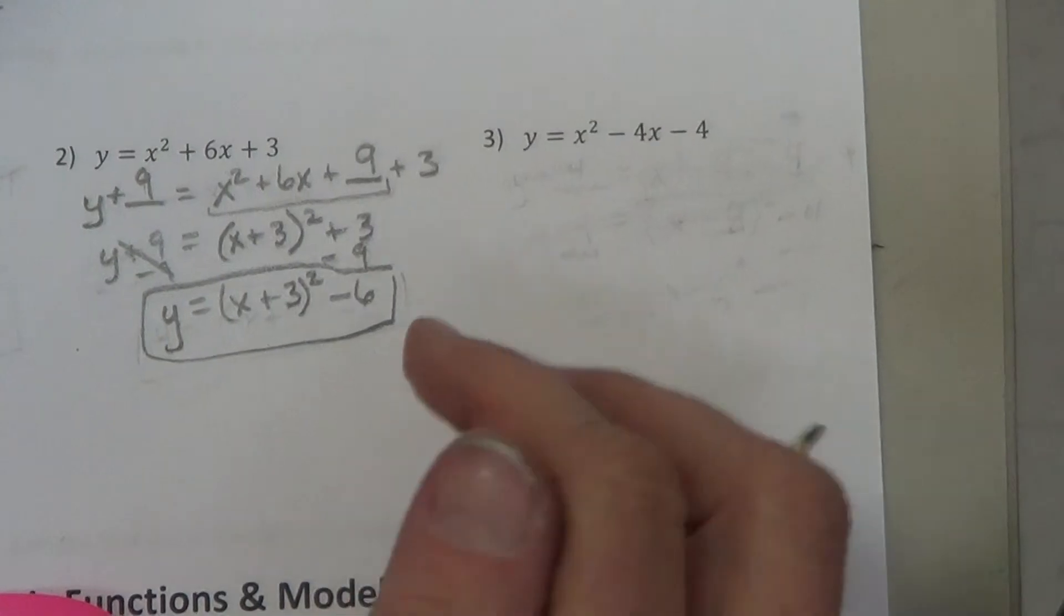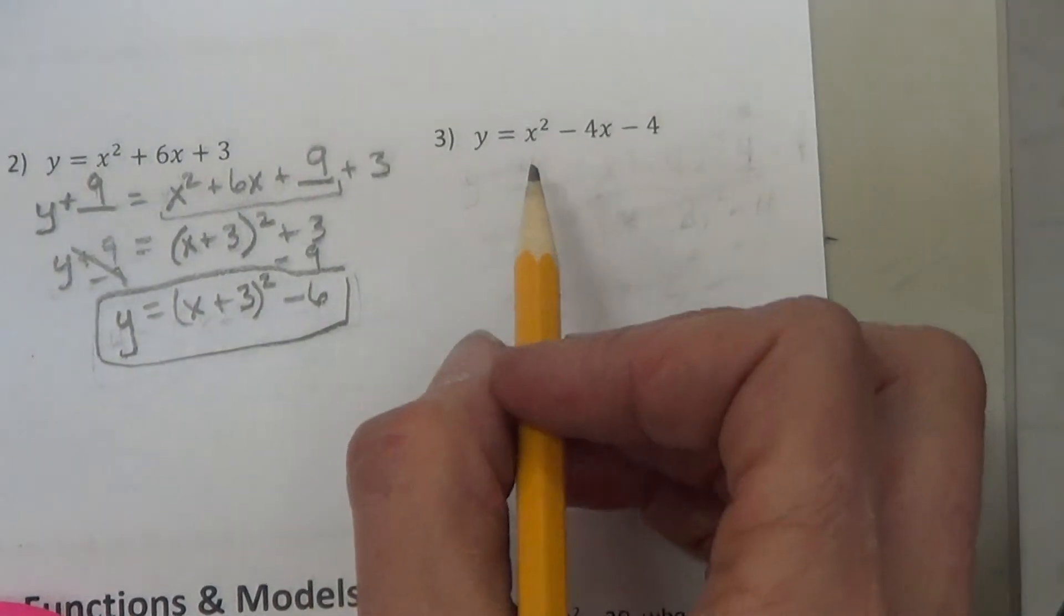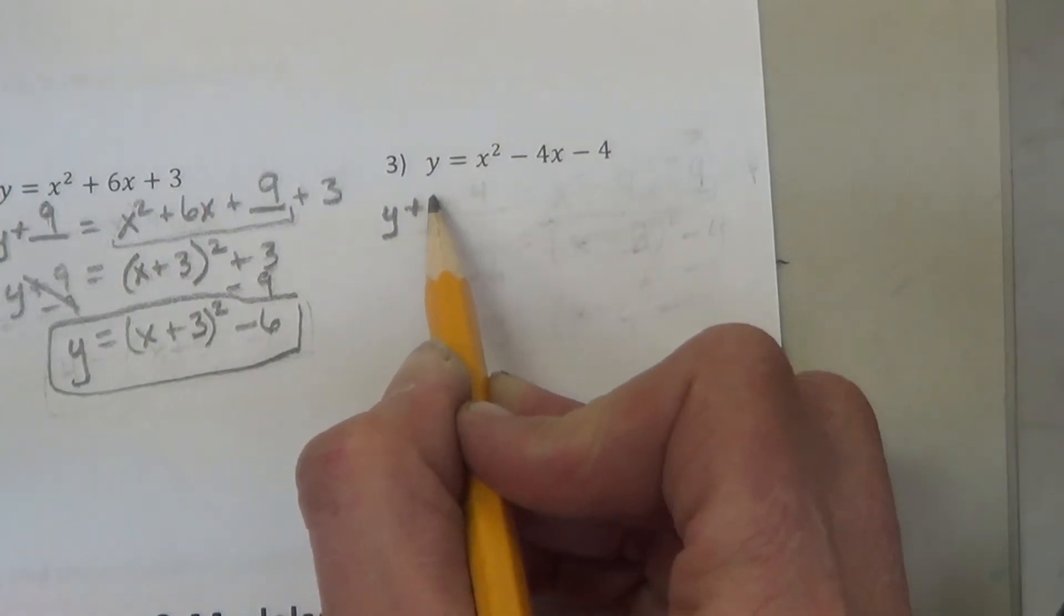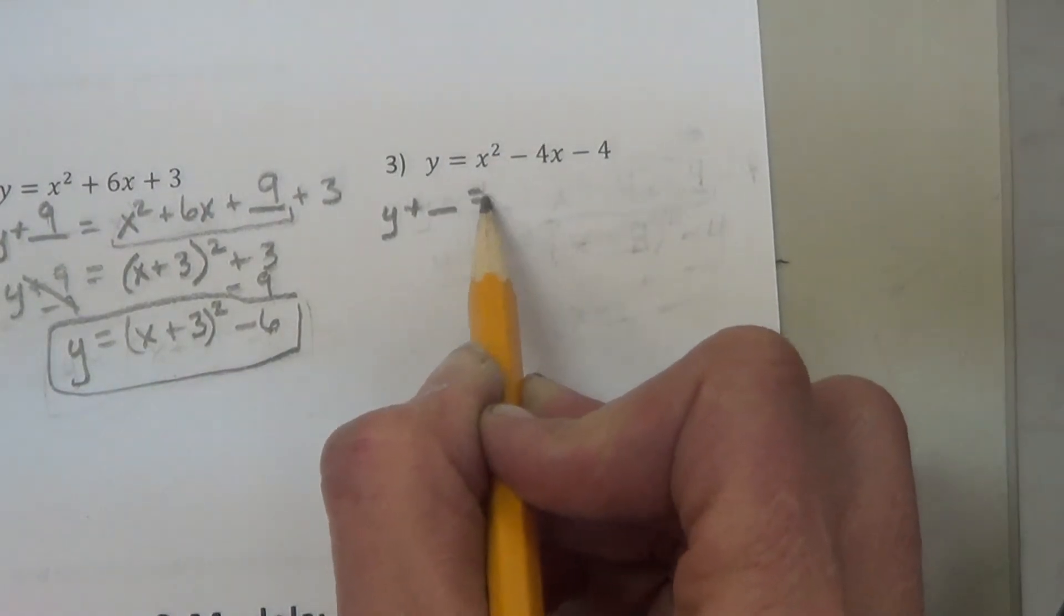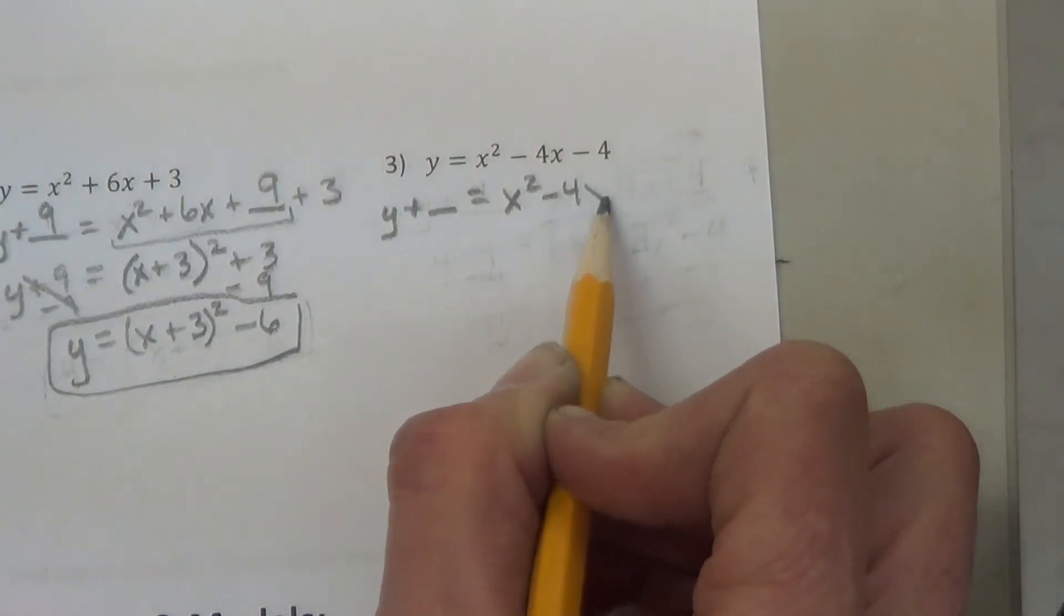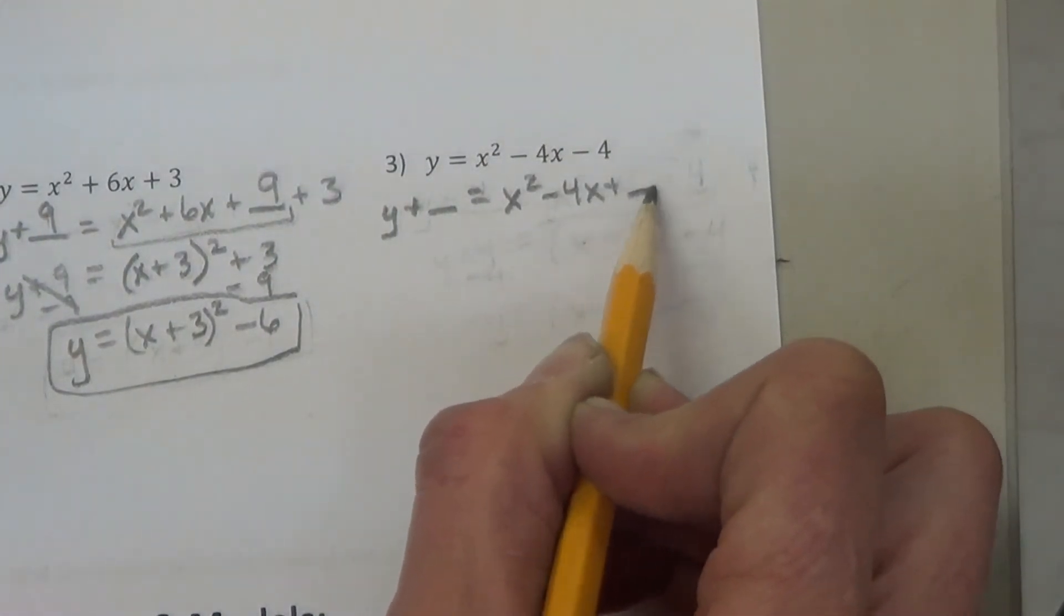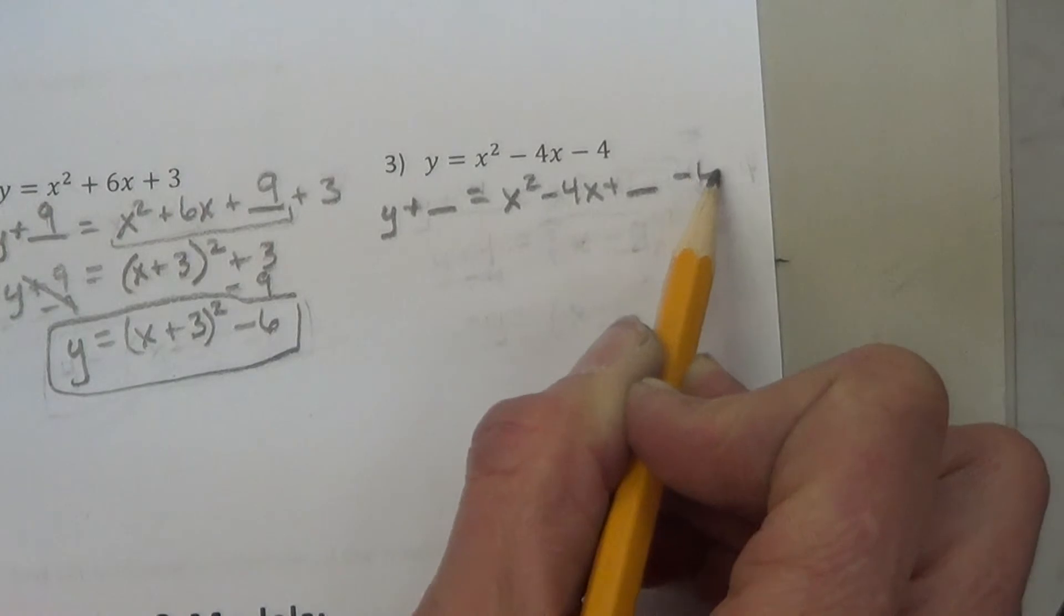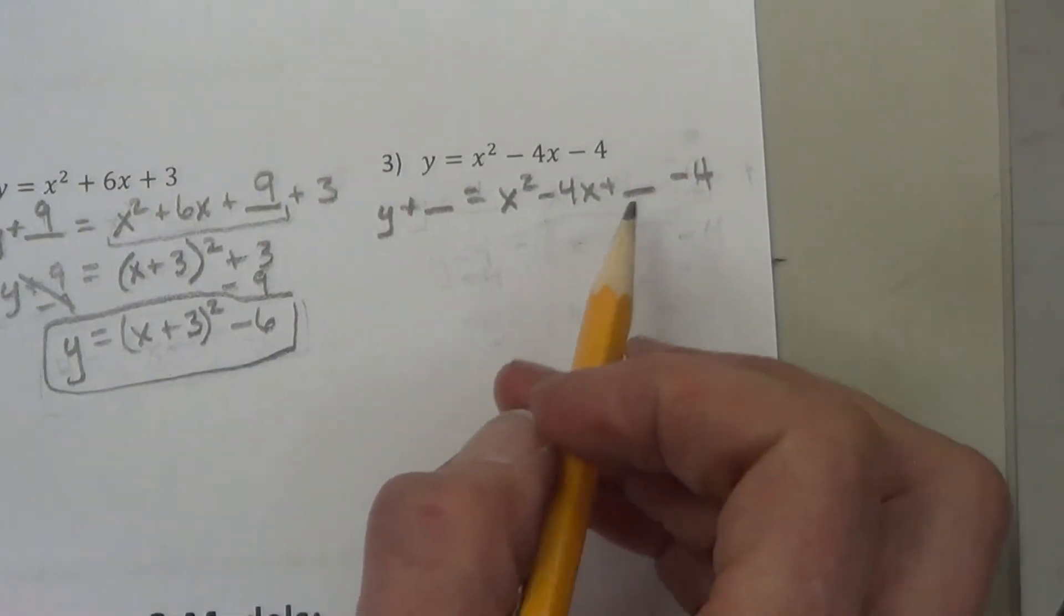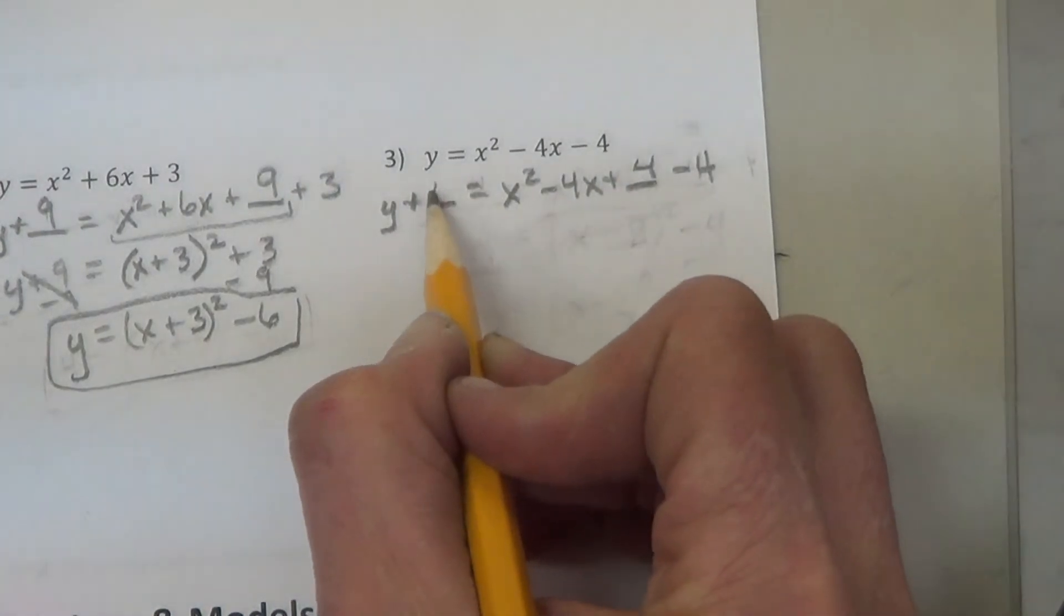You only have one more to do. Try and do this one on your own. Pause the video. Try it again. We have y plus blank equals x squared minus 4x plus blank minus 4. Half of 4 is 2. 2 squared is 4. So we add 4 to each side.